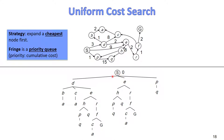Let's take an example. In the beginning, we have only the start state in the fringe with cost zero. We expand the start state into D, E, and P. The cost of D is 3, E is 9, and P is 1. The cheapest one to expand next will be P.